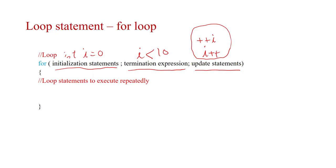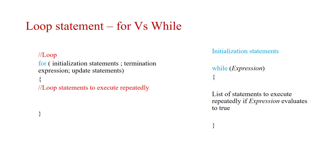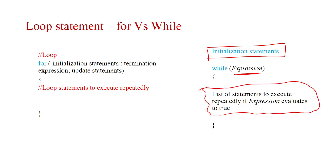The for loop puts everything — initialization, condition, and update — all in the same line. With while, the initialization is before the loop, the termination expression is in the while condition, and the update is inside the loop body. So the for loop and while loop are equivalent in structure.